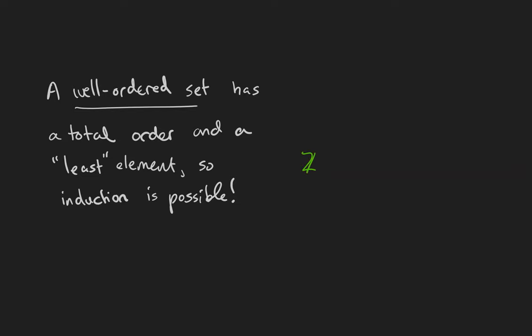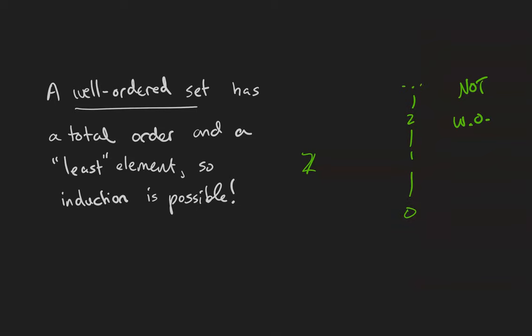Here is an example of a set with a linear order but not a well-ordering, the set of integers that extends infinitely in both directions. Now this is not well-ordered. However, if we take away all of the negative numbers and start our order at zero then we get the set of natural numbers, which is well-ordered.